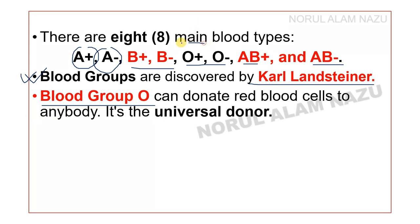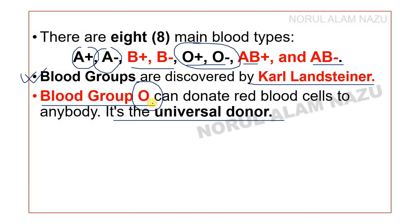Blood group O can donate red blood cells to anybody, making it the universal donor. Any blood group can donate to its own blood group.